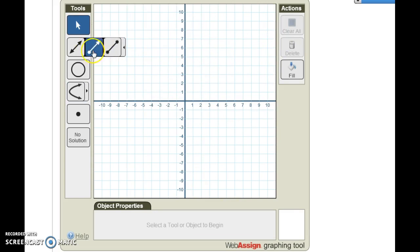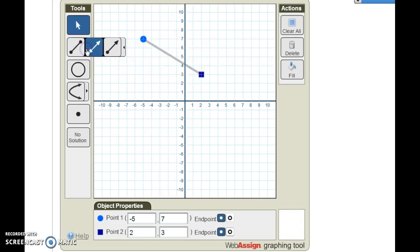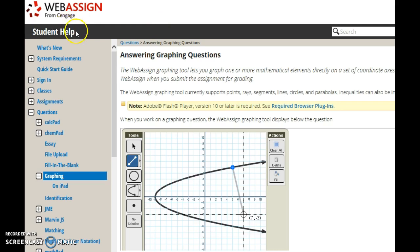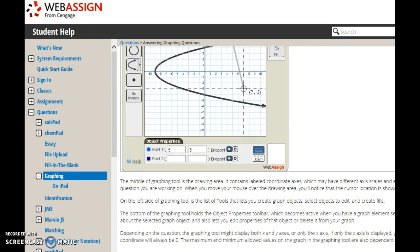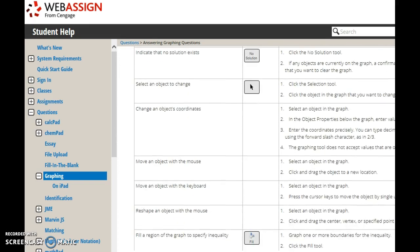If instead of a line, you want to draw a ray or just a line segment, select the correct option from this arrow. If you want to learn more about graphing and read about it, you can go into WebAssign Student Help under Questions, Graphing. Again, there's a nice little document all about the graphing tool and it walks through it and discusses each of the features in the tool.